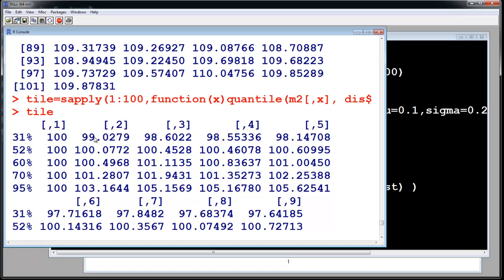Let us start reading the percentiles from here. For the first evolution you always have 100, then the second evolution you start getting real data: 31st percentile is 99, 52nd percentile is 100, 60th percentile is again 100, 70th is 101.